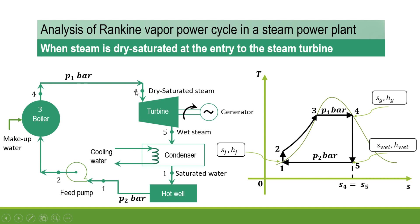At point 4, the dry saturated steam enters the turbine and there is isentropic expansion from 4 to 5 in the turbine. Point 5 lies in the wet region, so the condition of the steam at point 5 is wet. This wet steam is allowed to enter the condenser, where the latent heat is absorbed from the wet steam by circulating cooling water. Process 5 to 1 is the heat rejected in the condenser.